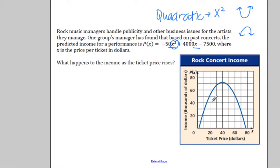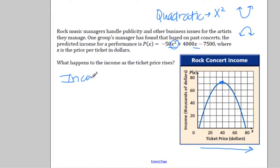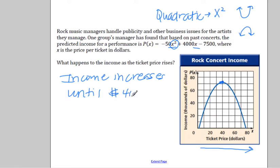Here is our function graphed. As our prices rise — we're at 0, 20, 40, 60, 80 — as we go in this direction the ticket price rises, the income rises until a certain point. Once I get to that peak, my income starts decreasing. So the income increases until $40 a ticket.